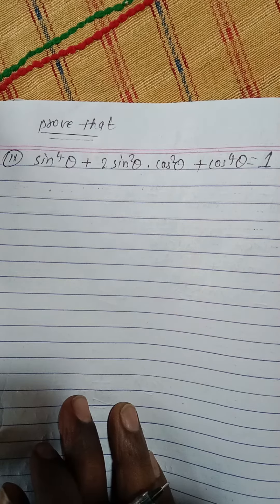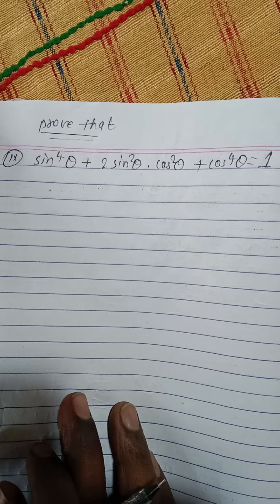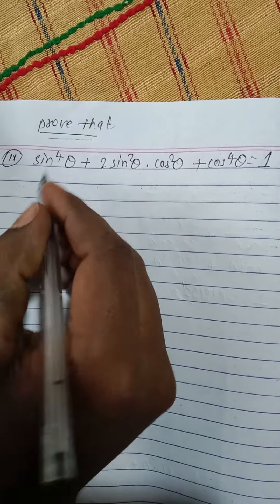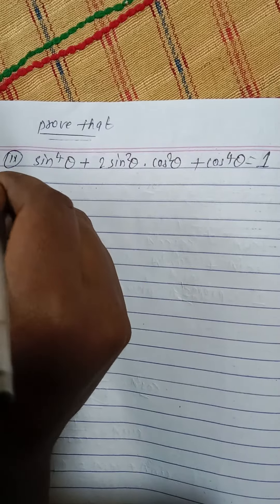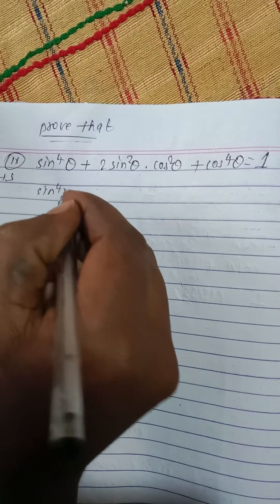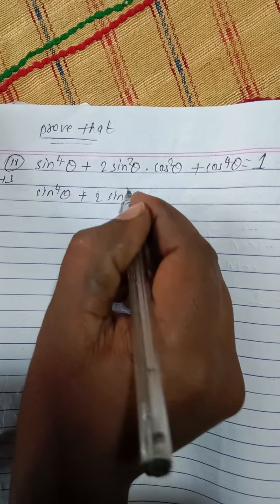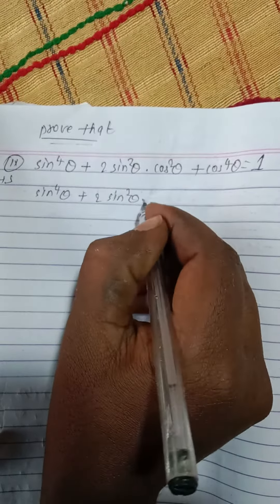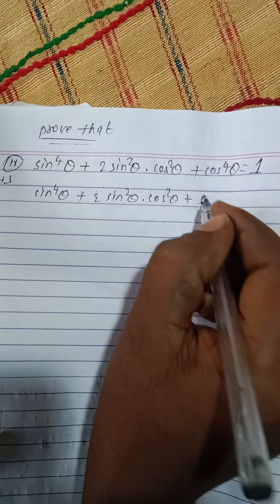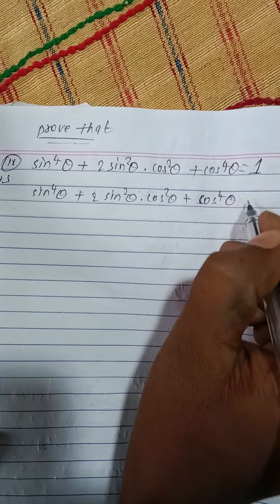In this problem we have to prove that sin power 4 theta plus 2 sin square theta times cos square theta plus cos power 4 theta equals 1. Now I am going to solve this, starting with the left-hand side: sin power 4 theta plus 2 sin square theta times cos square theta plus cos power 4 theta.